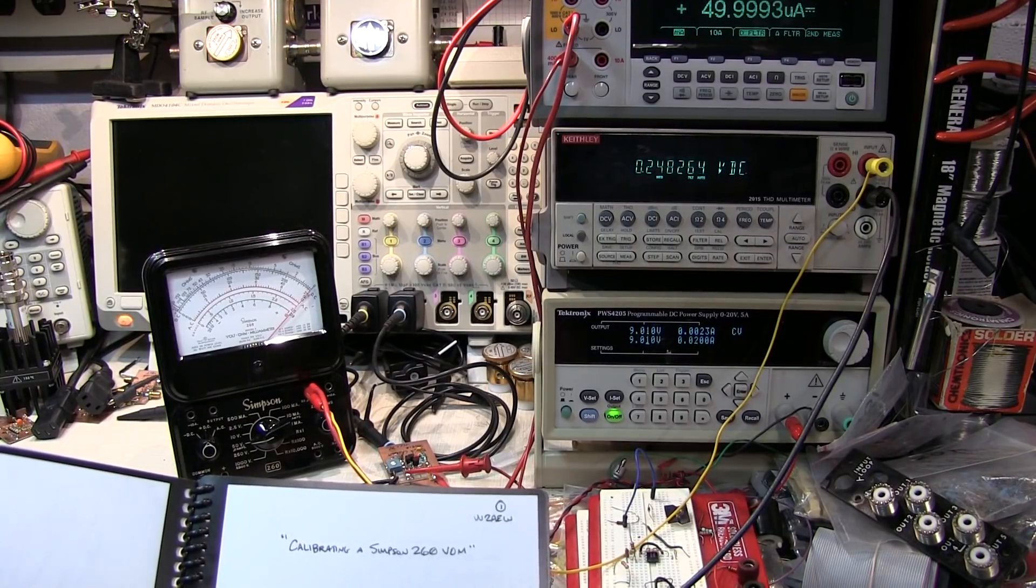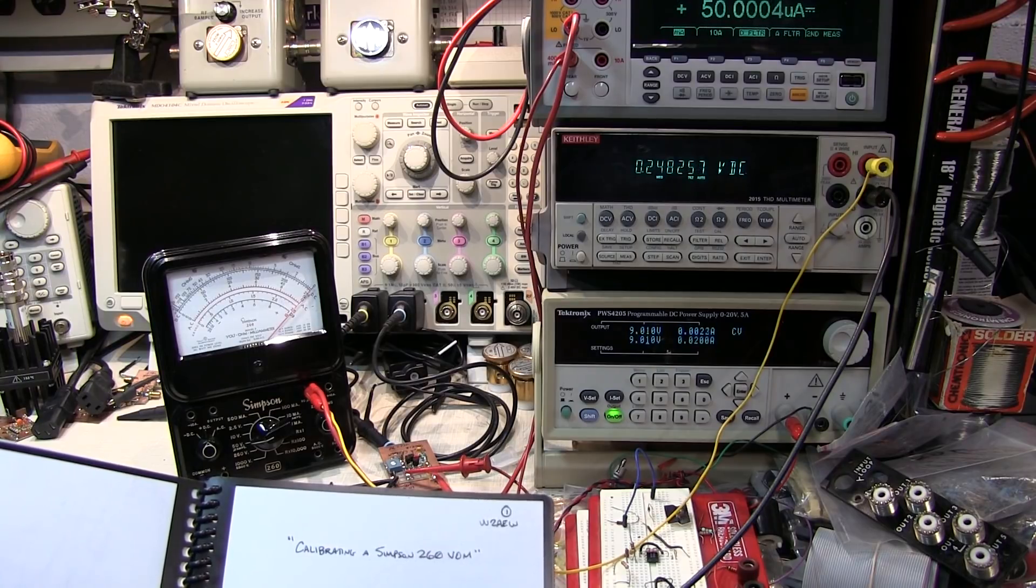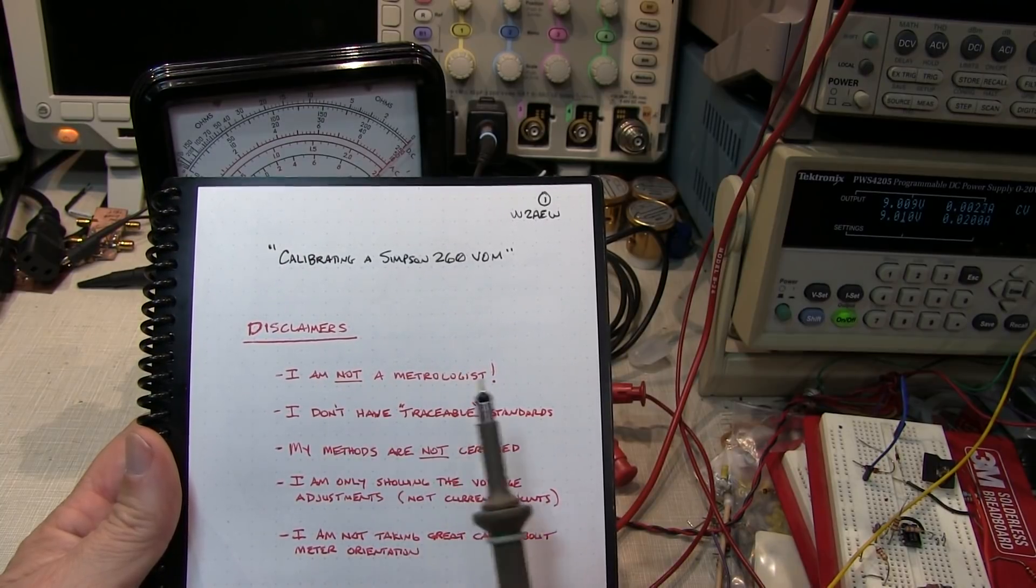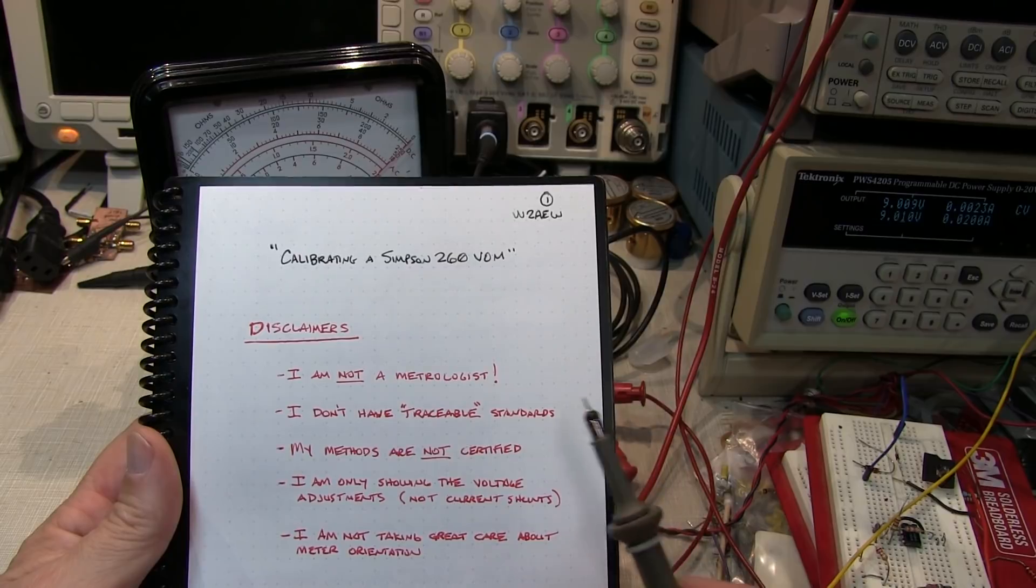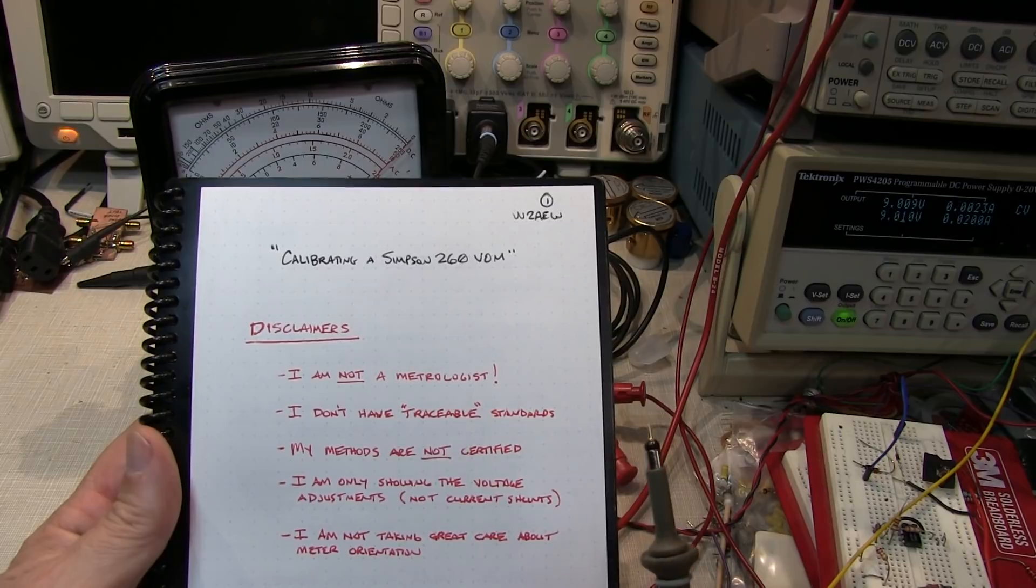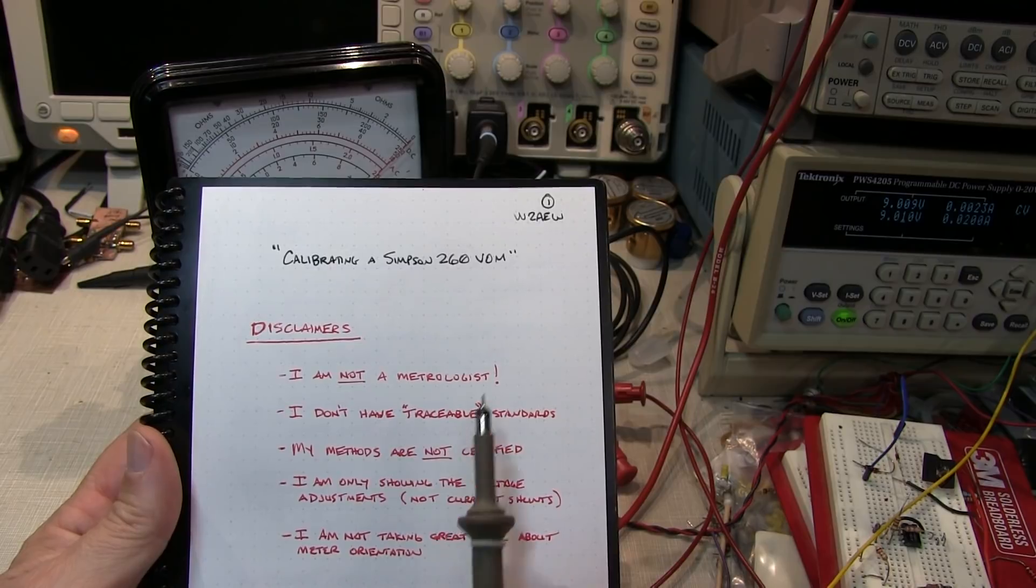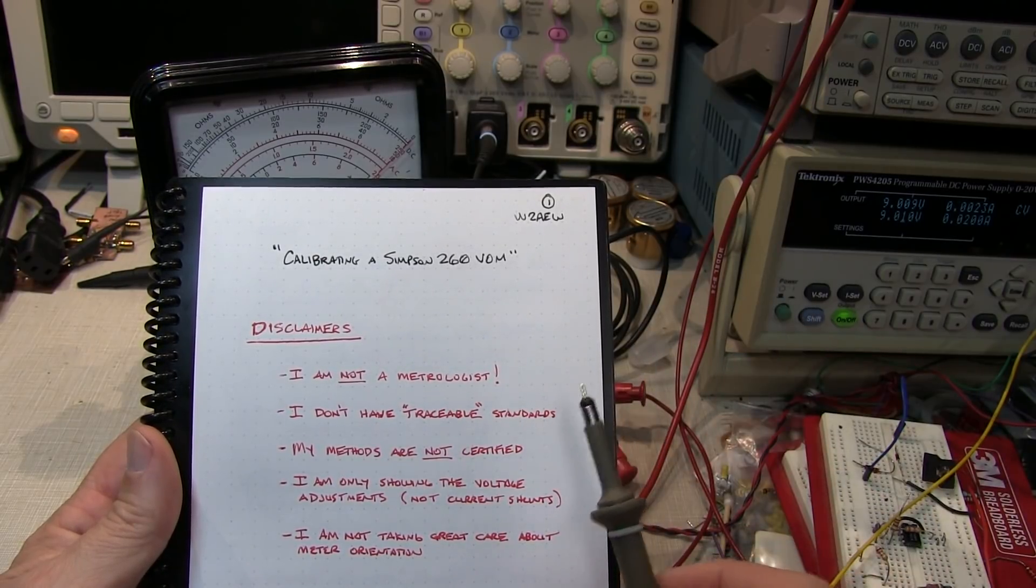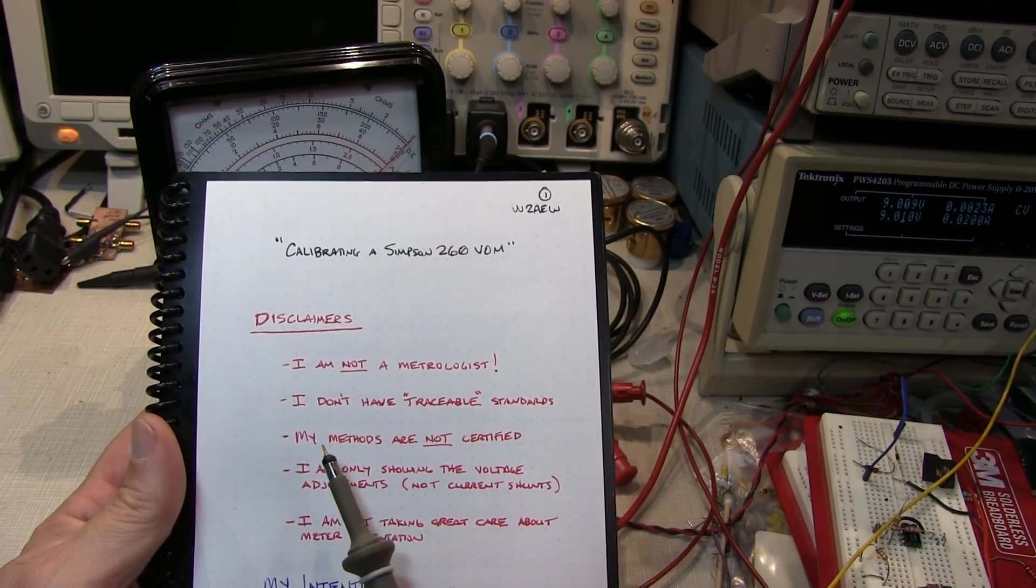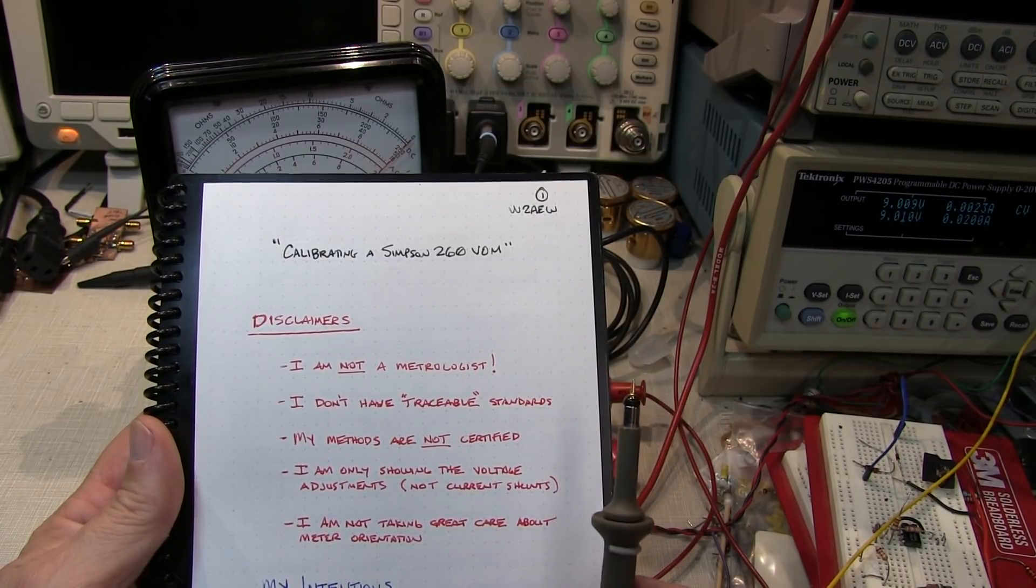In this video, we're going to take a look at the calibration adjustments in the Simpson 260 volt ohm milliameter. Let me start with a couple of disclaimers. First, I am not a metrologist. I've never worked in a calibration lab or done any real calibration work. I'm just an engineer and hobbyist. In my lab, I don't have any traceable standards. I'm just going to be using a couple of DMMs that have much better accuracy than the 260 to validate its operation. My methods are not certified or necessarily what would be used in a true cal lab.